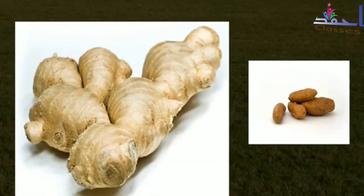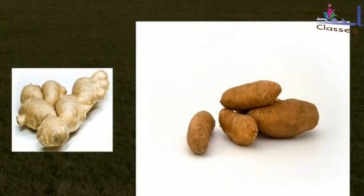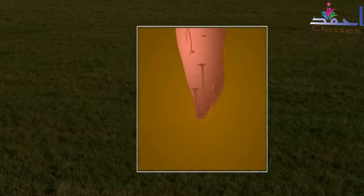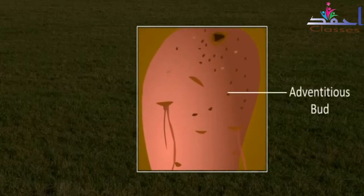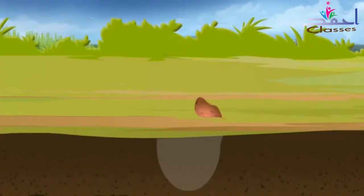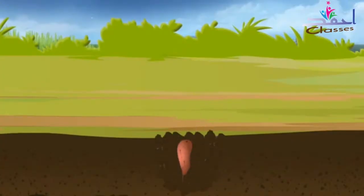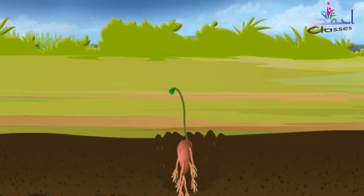Vegetative reproduction in sweet potato. Vegetative propagation by root tubers takes place in sweet potato and some other plants. The roots of some plants develop adventitious buds on them. Some tuberous adventitious roots, besides possessing adventitious buds, also contain sufficient quantities of food.